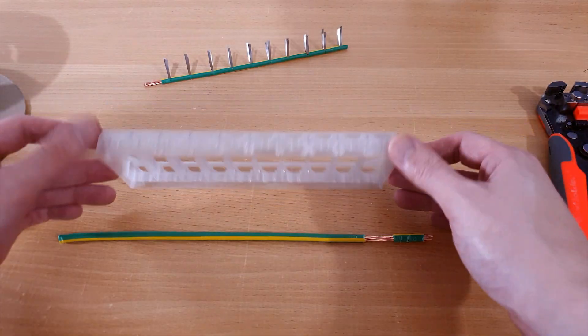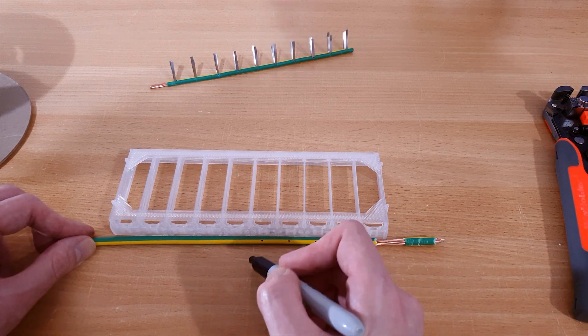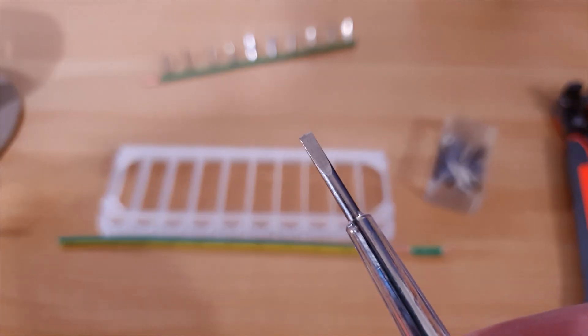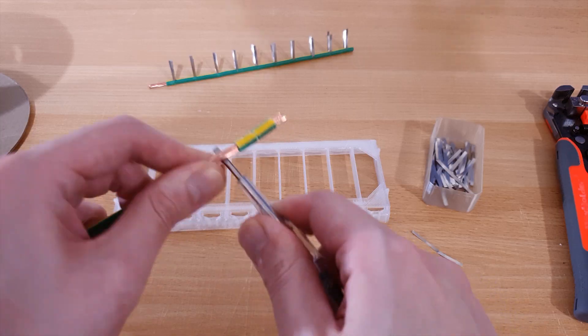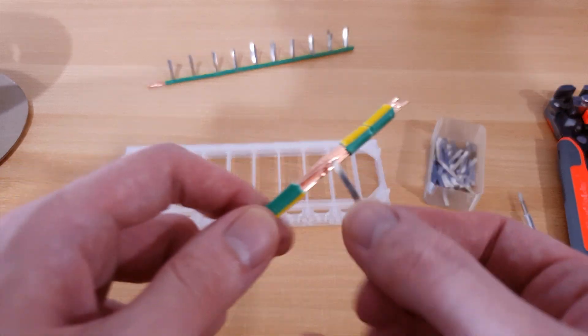Then we can make a mark where each nickel strip will be and use the tray as a guide for this. Once you have all the marks, you can use a small screwdriver to open up a gap in the wire.